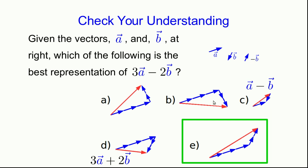a and b have nothing to do with 3a minus 2b because these vectors are neither b nor negative b. They're an incorrect attempt to flip b end for end.